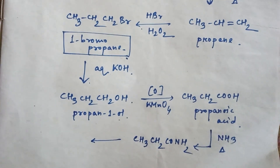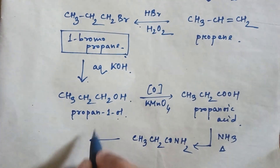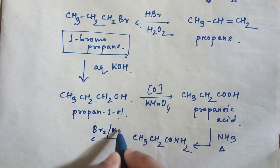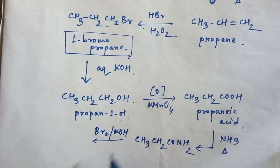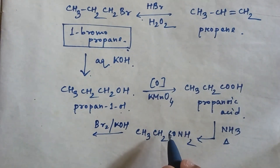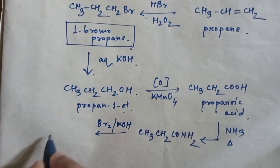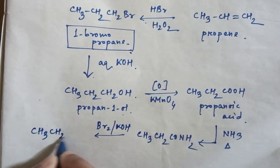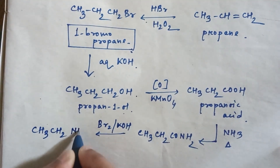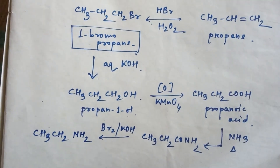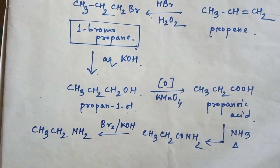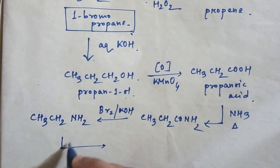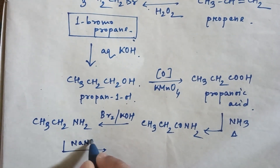Then use ammonia and apply heat, then this acid will convert into an amide — so the product will be propanamide. Now if you do Hofmann bromide reaction by using Br2 and KOH, then the CO group will be removed and the product will be CH3CH2NH2 — ethylamine.